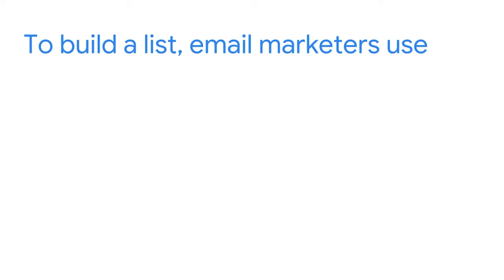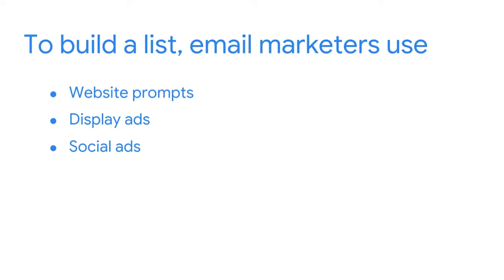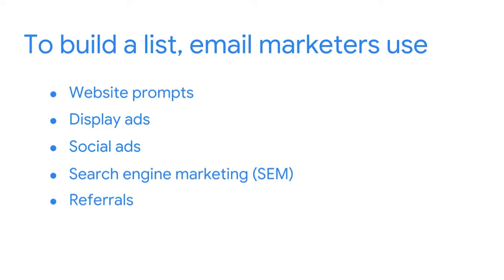The moment you start generating leads, you've begun building up your mailing list. So how do you go about getting those leads? Email marketers typically use one or more of the following strategies: website prompts, display ads shown in the Google Display Network or through Criteo, SEMrush, and Taboola, social ads like Facebook lead ads, search engine marketing or SEM, referrals, and direct email marketing.